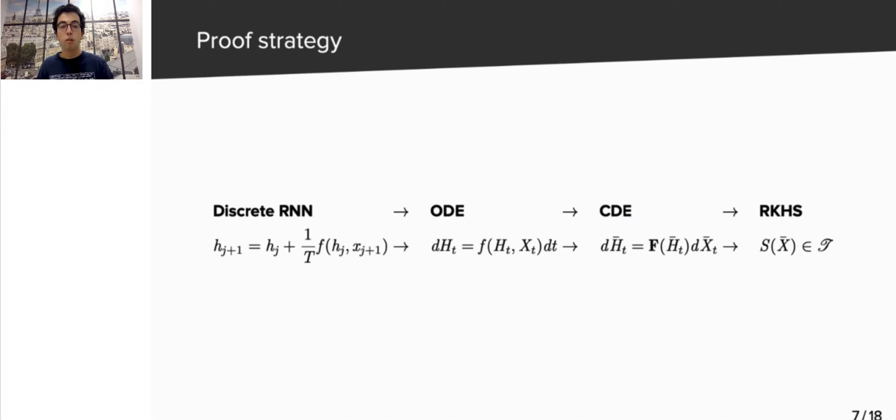Now, we would like to give you an overview of the main ideas of the proof. As we saw earlier, the first step is to bound the difference between the discrete RNN and its continuous counterpart. Then, we use an algebraic trick to reformulate the ODE as a controlled differential equation, or CDE. This is where the signature S of X comes into play. It allows to frame the solution of the CDE as a scalar product in an infinite-dimensional tensor space. Now, I will let Adeline walk you through steps number 2 and 3.